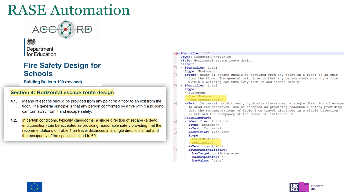Here is an example of the RAISE automation output. The model takes a fire safety design for schools block of regulations and automatically defines the paragraphs in the text, then automatically builds the YAML file with RAISE annotations that reflect the logical relationships between entities in the paragraph. Our best model, which is the back end of the tool, is a fine-tuned GPT-4 model achieving around 81% accuracy.